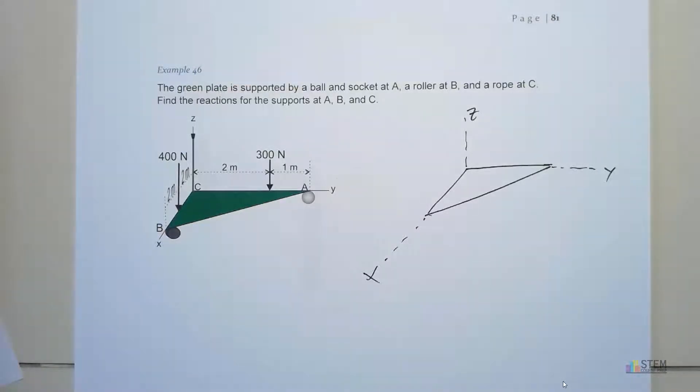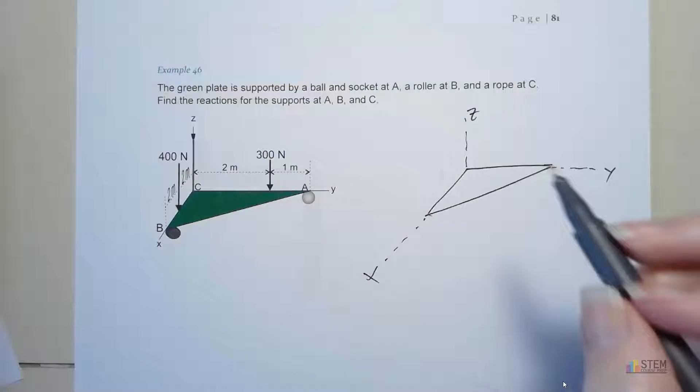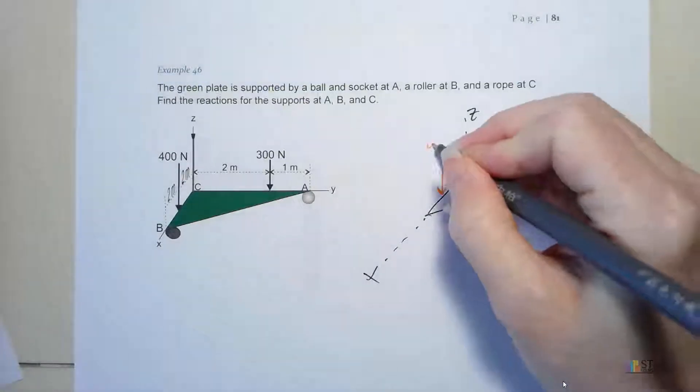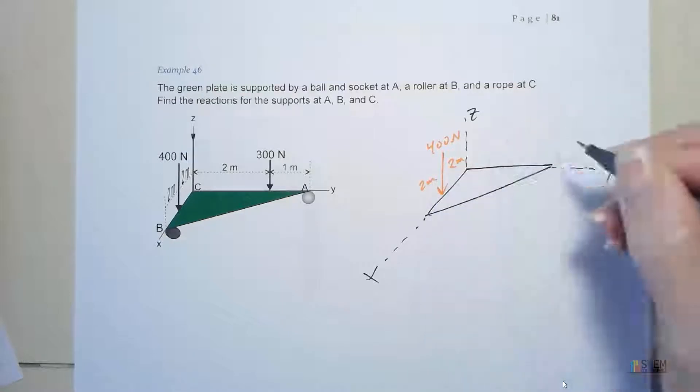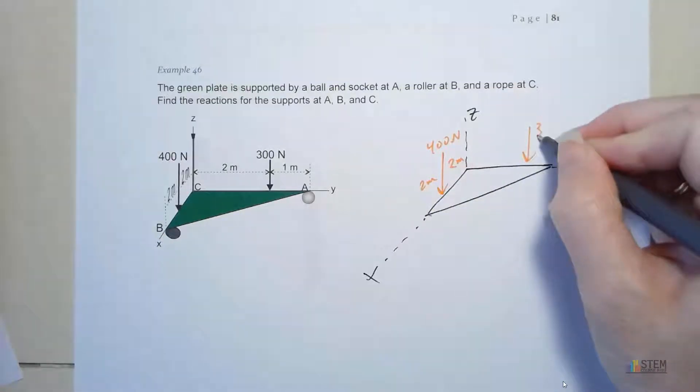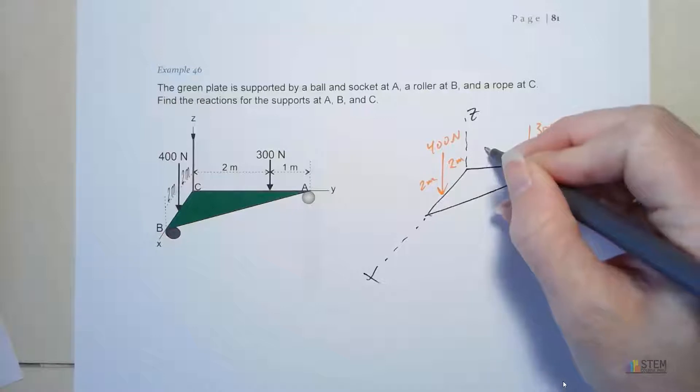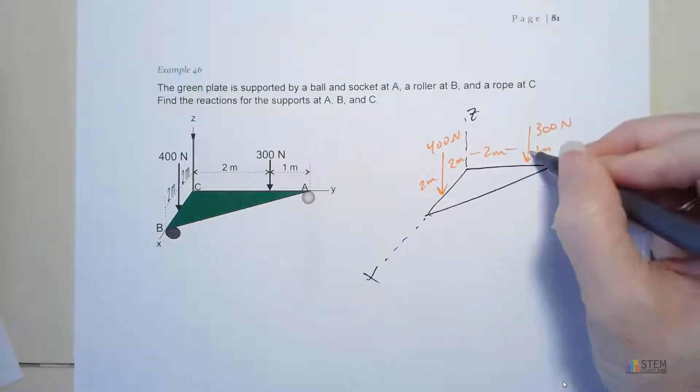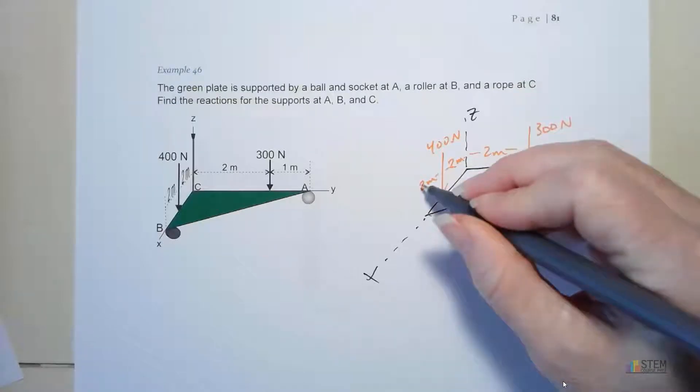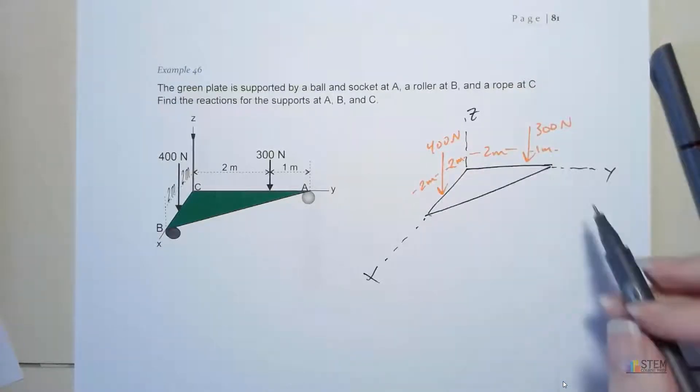Now let's label the forces. We've got these two applied forces here: 400 newtons and 300 newtons. Let's draw those. That's 2 meters, 2 meters, and then the 300 over here. That's 2 meters and 1 meter. Now we know our distances and we've got these two forces.